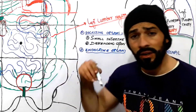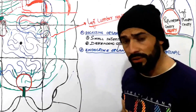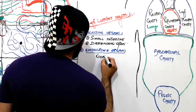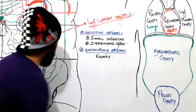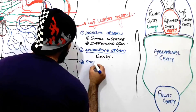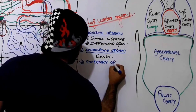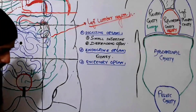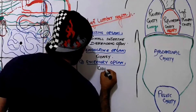The kidney has a very important role in the endocrine activity of our body, as it releases certain hormones. So the endocrine organ found in the left lumbar region is the kidney. The kidney is also the most important excretory organ found in the left lumbar region.